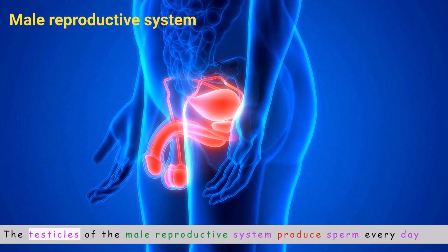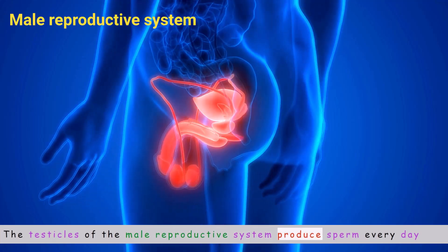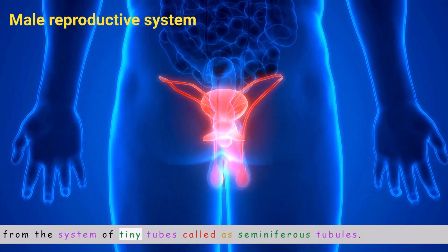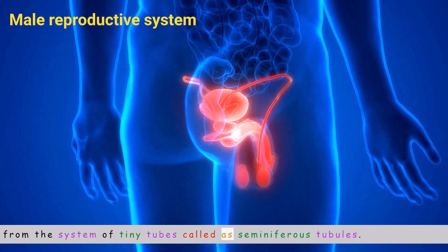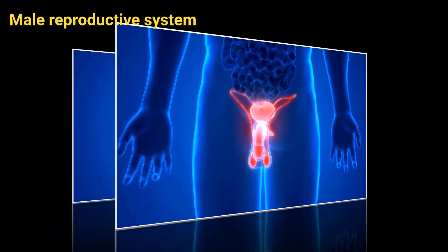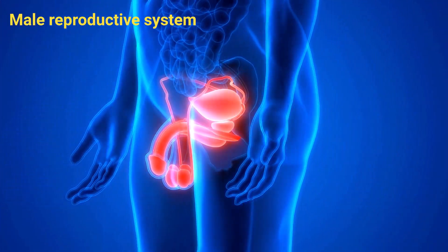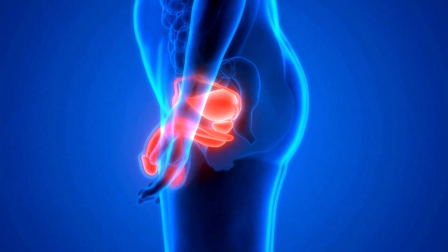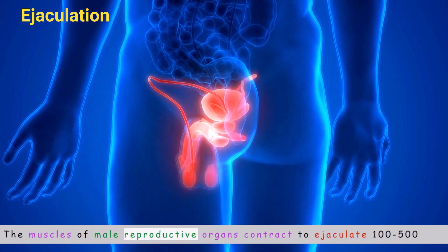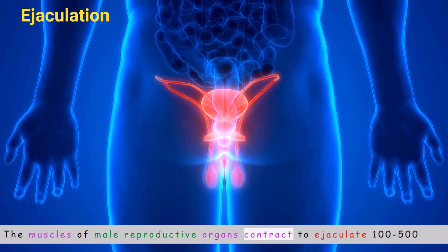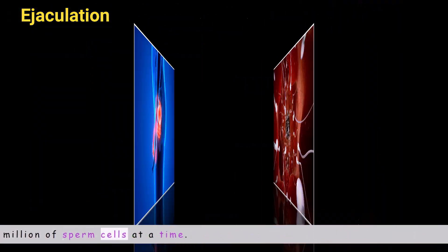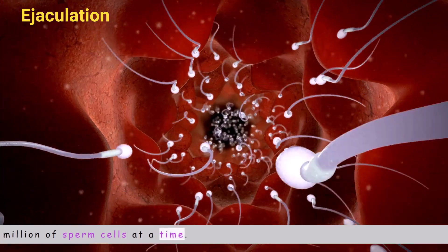The testicles of the male reproductive system produce sperm every day from a system of tiny tubes called seminiferous tubules. The muscles of male reproductive organs contract to ejaculate 100 to 500 million sperm cells at a time.